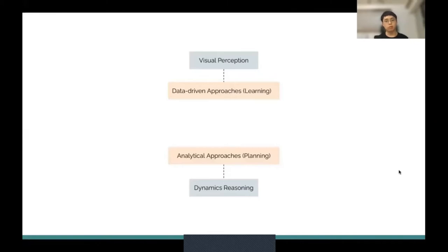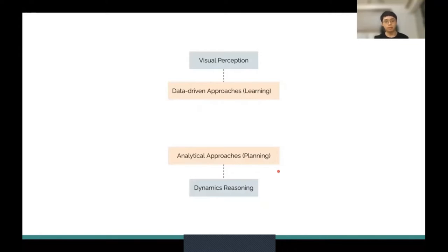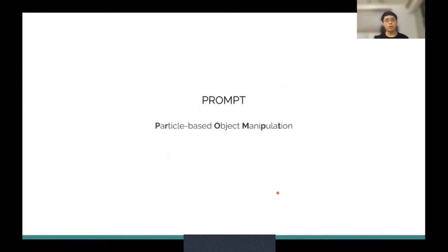Let's look at this closer. We have the visual perception challenge and the dynamics reasoning challenge. The data-driven approach addresses visual perception well by training neural networks with CNN encoders, while the analytical approach is good at dynamics reasoning. The answer is that we can use particle states to connect visual perception and dynamics reasoning. We are proposing PROMPT, which stands for particle-based object manipulation.